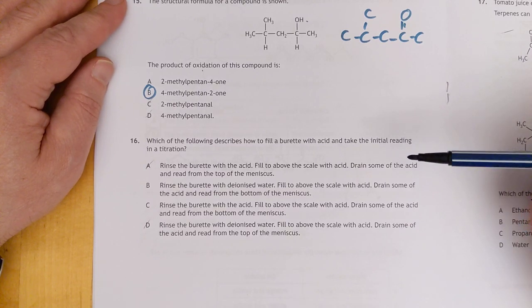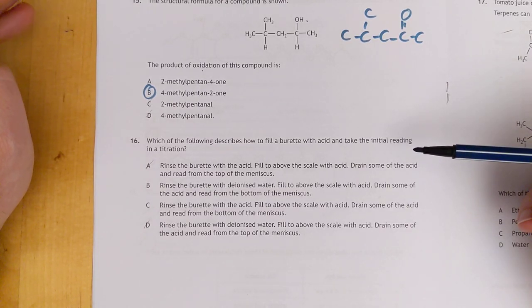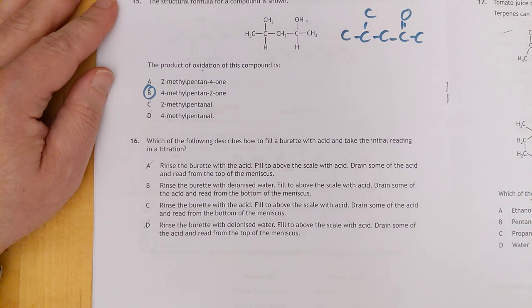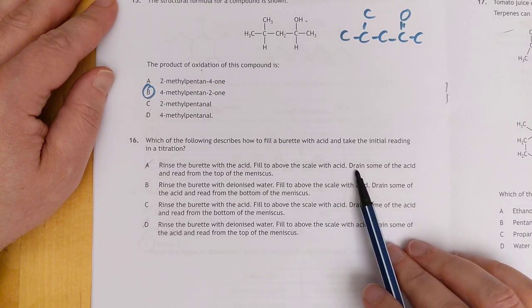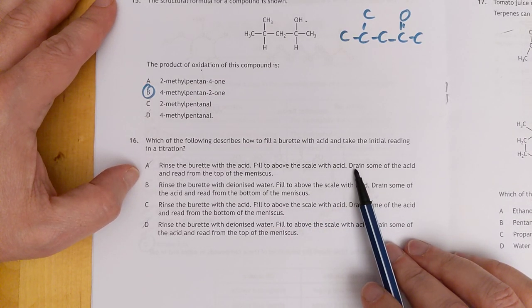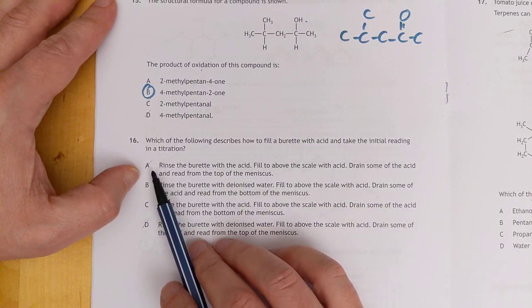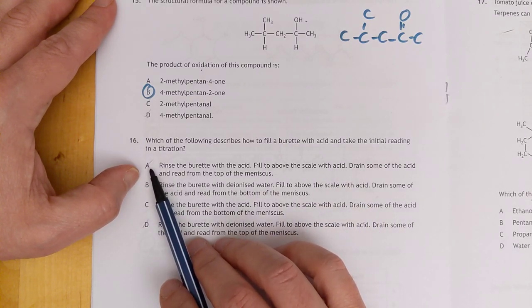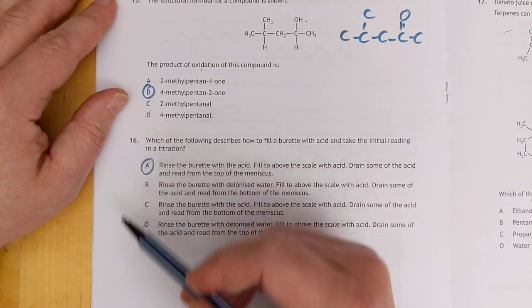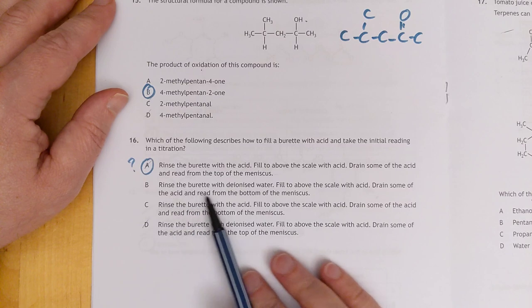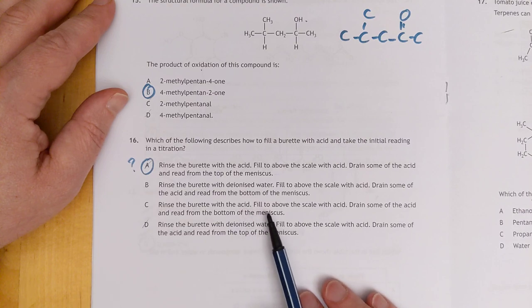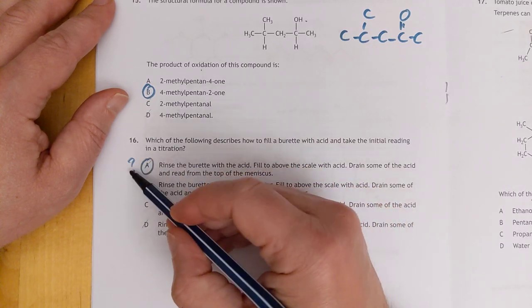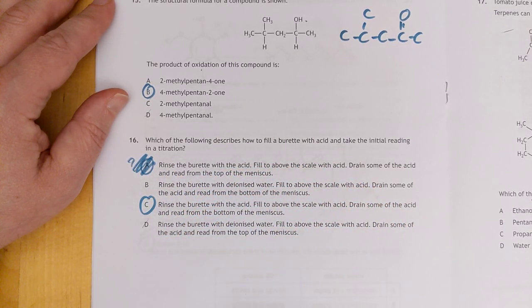Number sixteen. Which of the following describes how to fill a burette with acid and take the initial reading in a titration? Rinse the burette with acid. Fill above the scale with the acid, drain some of the acid and read from the top of the meniscus. This person has discarded that. I wonder why. That looks about right to me. Let's check the rest. Rinse the burette with deionized water. No. Then you dilute the acid. Oh, the top of the meniscus. Ha ha! This person was a stage ahead of me. The bottom of the meniscus. Excellent.